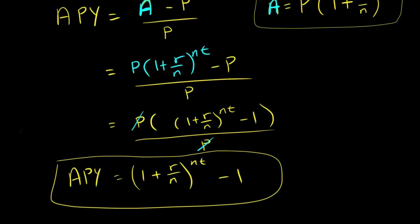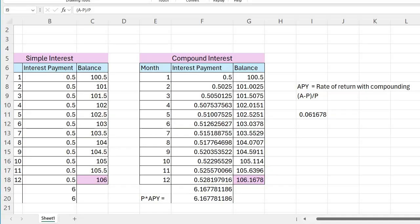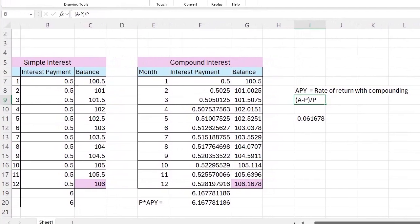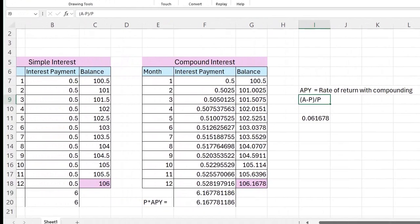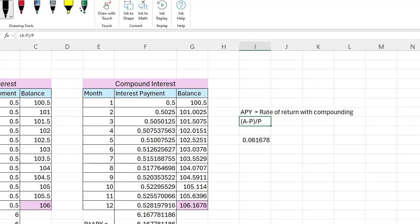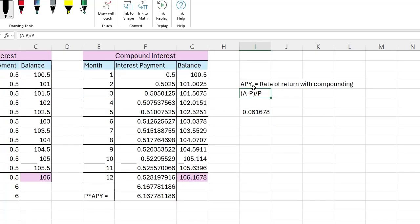Now, to apply this formula to the example that we had previously, let me pull that up. We discussed this example in the video directly previous to this in the playlist. Previously, I calculated my APY by calculating my rate of return. Now I want to use that formula, so let me write it down.